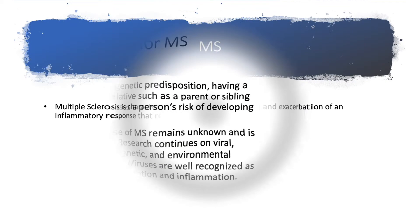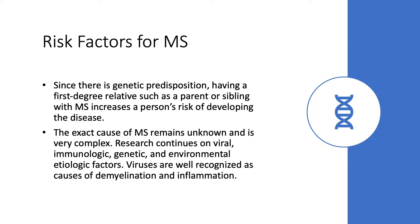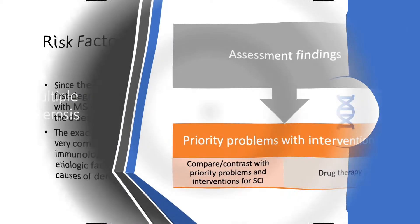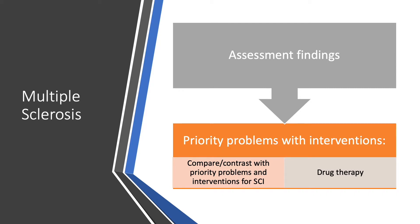Regarding risk factors for MS, there is a genetic predisposition — having a first-degree relative such as a parent or sibling with MS increases that person's risk for developing the disease. The exact cause of MS remains unknown and is very complex. Research continues on viral, immunologic, genetic, and environmental etiologic factors, as viruses are well recognized as causes of demyelination and inflammation.